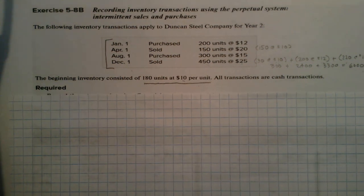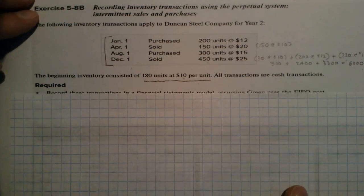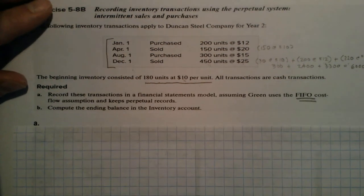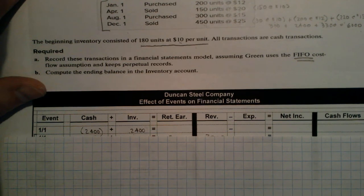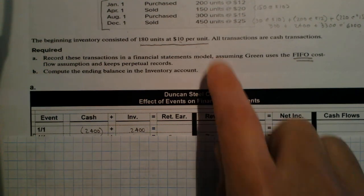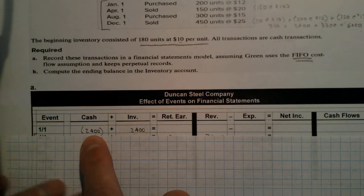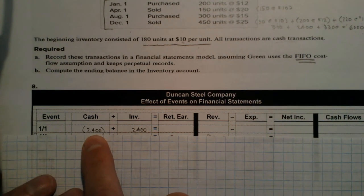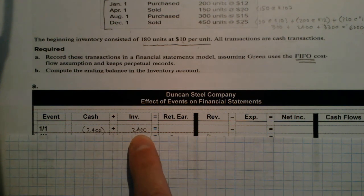They want us to put these transactions — all of which are cash transactions — into our grid. The first thing we have is we purchase that inventory: 200 units at $12. So $2,400 in cash leaves our business, and we now have $2,400 in inventory as a result of that transaction.